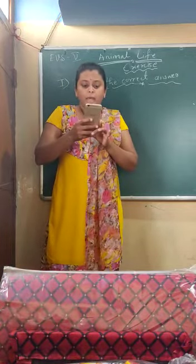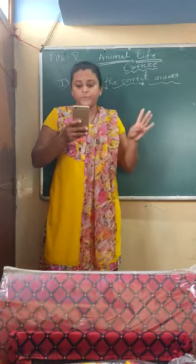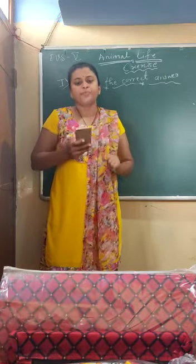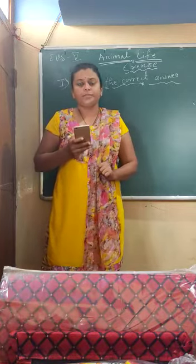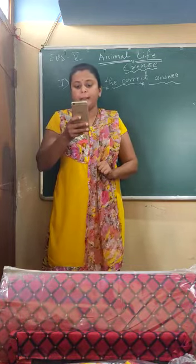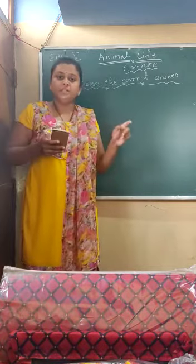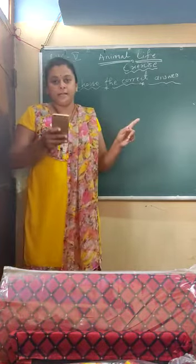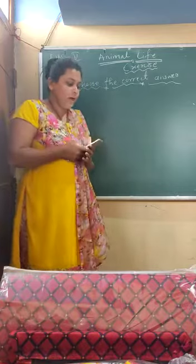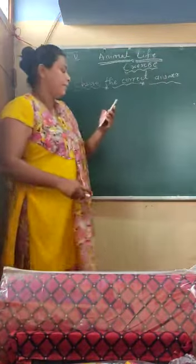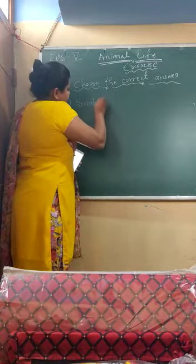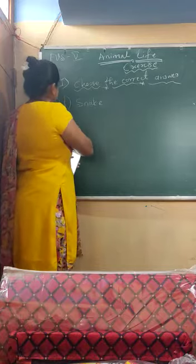The first question is: which is an oviparous animal? The options are lion, snake, cat, and elephant. Oviparous means the animal which lays eggs. Among these four animals, the one that lays eggs is the snake. So the answer is snake.